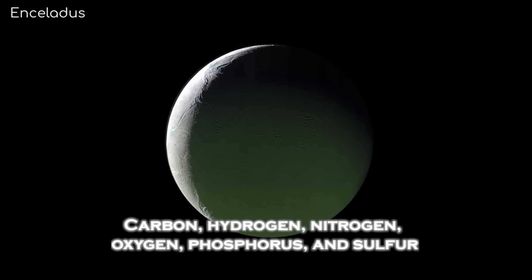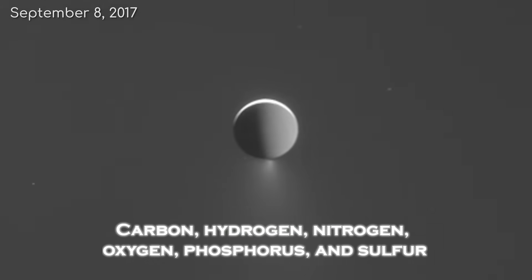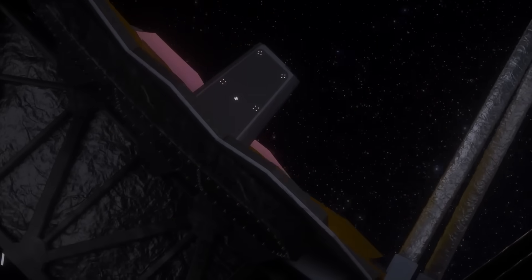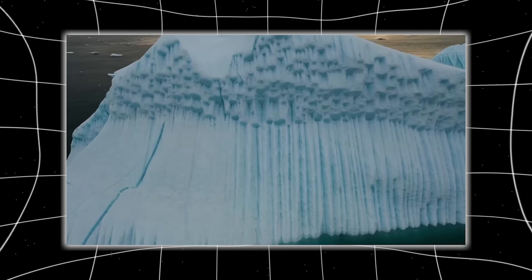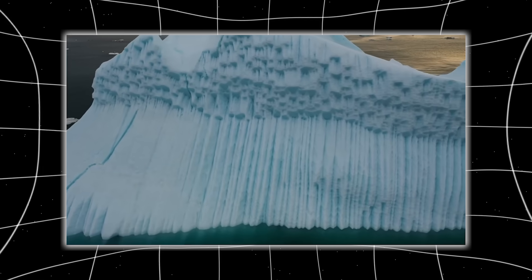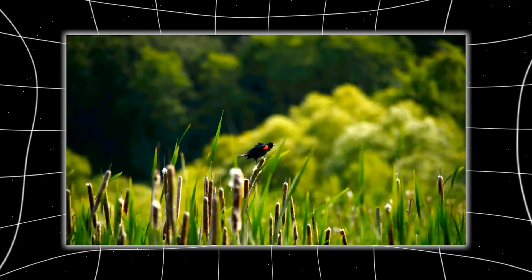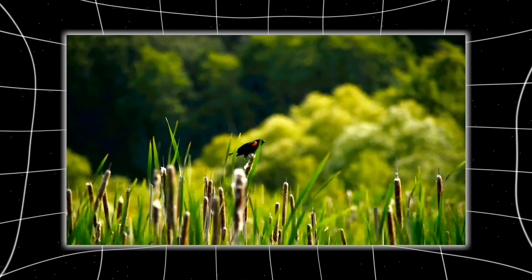Carbon, hydrogen, nitrogen, oxygen, phosphorus, and sulfur. Even more astonishing, Webb detected phosphates, molecules critical to the structure of DNA and essential for energy transfer in cells. This means that beneath Enceladus's ice crust lies an ocean that not only has liquid water, but the exact chemical cocktail that life on Earth needs to exist.